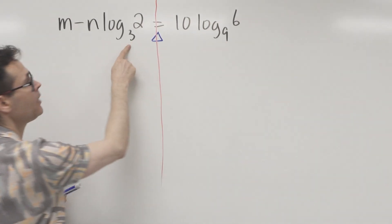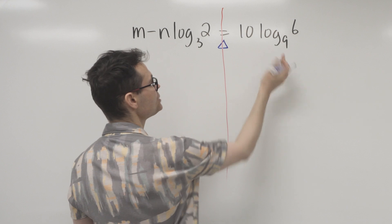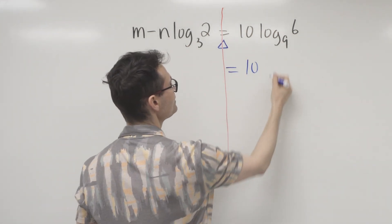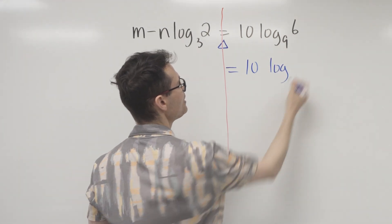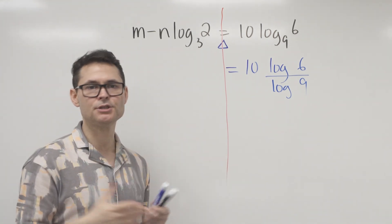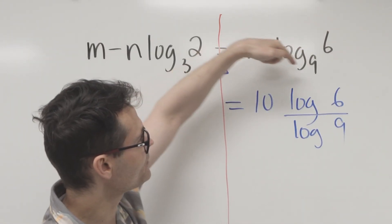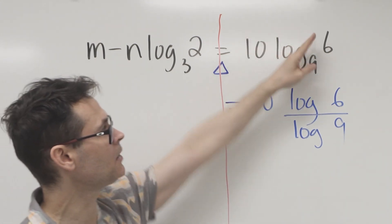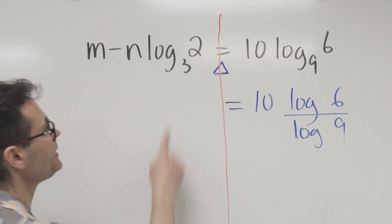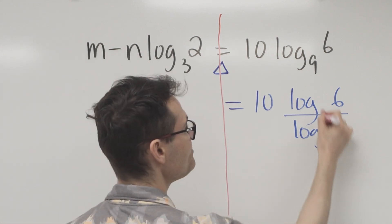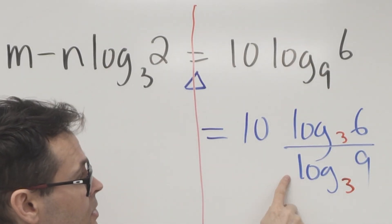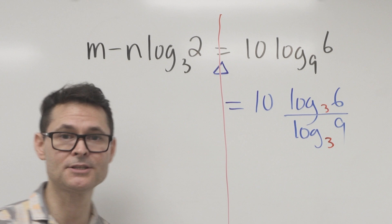I notice this term has base nine — I want it to be base three. So I'm going to change the base. I'll leave the other term alone for now. Using the change of base identity: 10 times log of 6 over log of 9, where log of 6 divided by log of 9 equals log of 6 base 9. I'll conveniently make the base 3. The denominator, log of 9 base 3, is just 2.